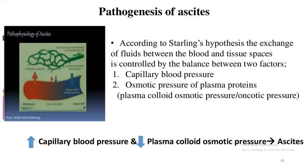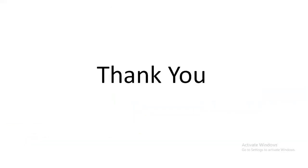The pathogenesis of ascites: according to the Starling hypothesis, the exchange of flow rate between the blood and tissue space is controlled by the balance between two factors — capillary blood pressure and osmotic pressure of plasma protein (oncotic pressure). An increase in capillary blood pressure and a decrease in plasma oncotic pressure together result in ascites. In this regard, the topic of ascites has been covered. Thank you.